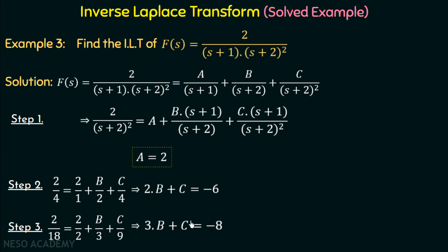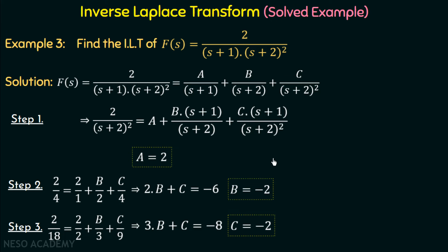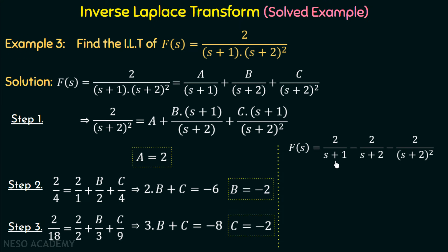Now we have two variables and two equations. Subtracting one equation from the other, we get the value of B equal to minus two. Substituting B into the equation gives C equal to minus two. Now we are done with the calculation of A, B, and C, and we put all these values in the equation to get f(s) equal to 2/(s+1) minus 2/(s+2) minus 2/(s+2) whole squared.